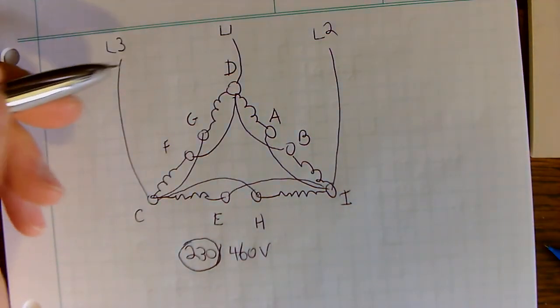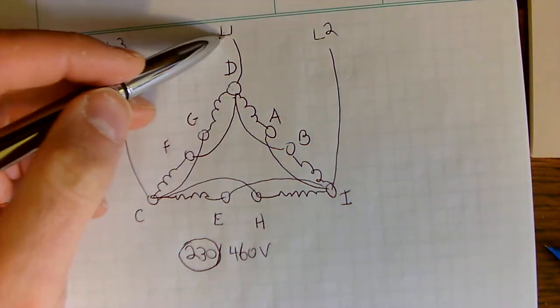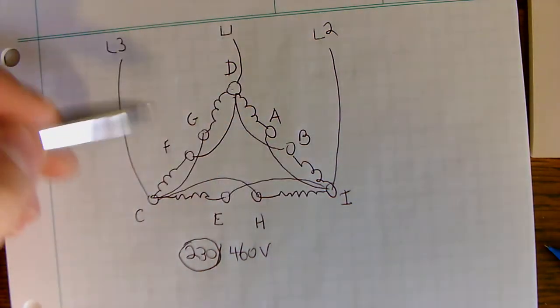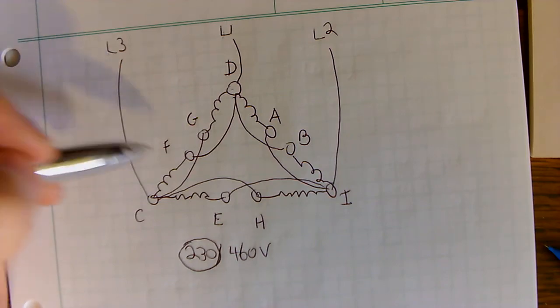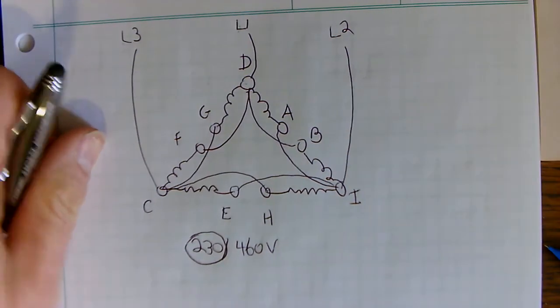Then C is going to connect to G and H. So that's how you're going to make those connections. And then D, as I said earlier, is going to connect to L1, I is going to connect to L2, and C is going to connect to L3. You make all those connections, you turn on the motor.